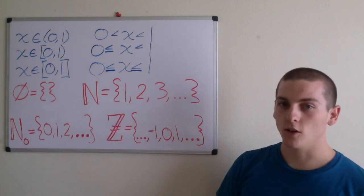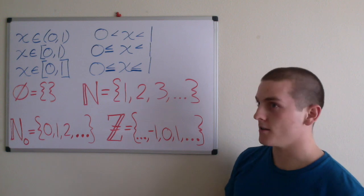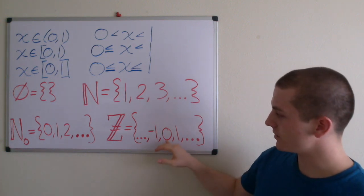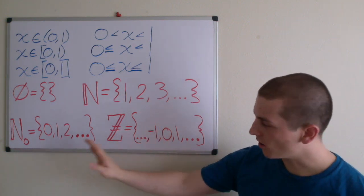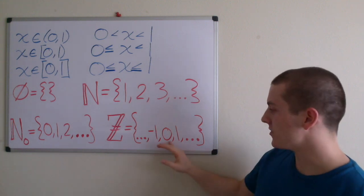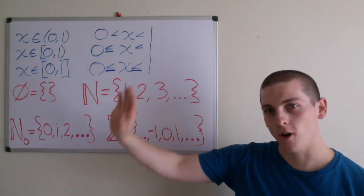And finally we have all of the integers, positive and negative, and non-negative, which is 0, negative 1, negative 2, all the way down to negative infinity, and 0, 1, 2, 3, 4, all the way up to infinity.